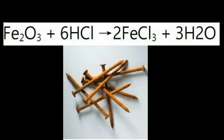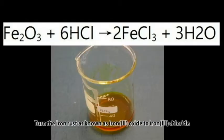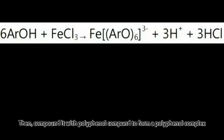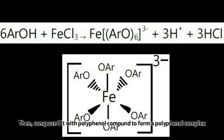So what we're going to do is turn the iron rust, aka iron-free oxide, to iron-free chloride. Then combine it with polyphenol to form an iron-polyphenol complex.